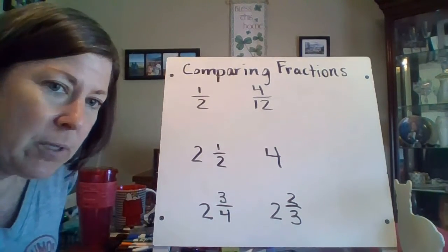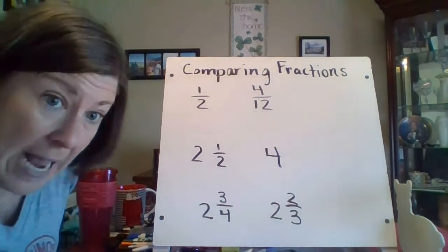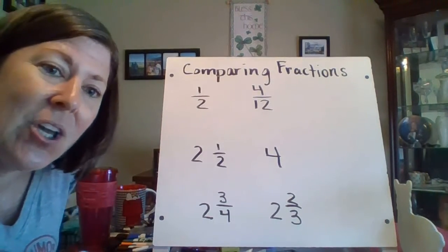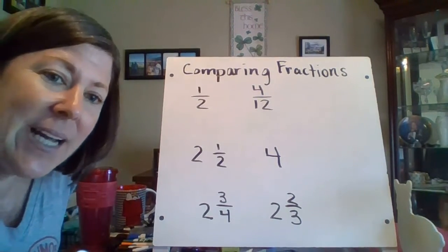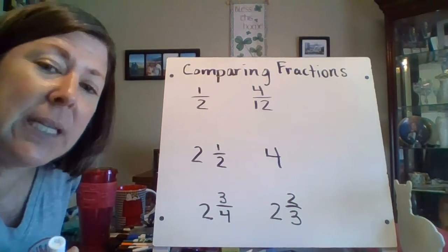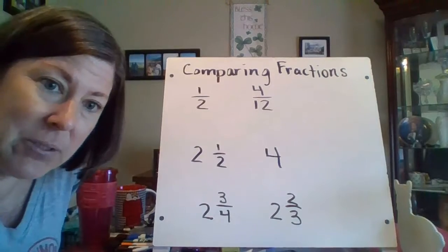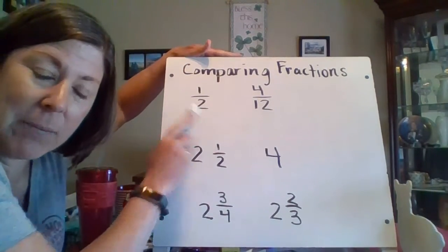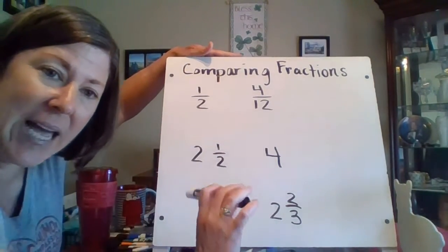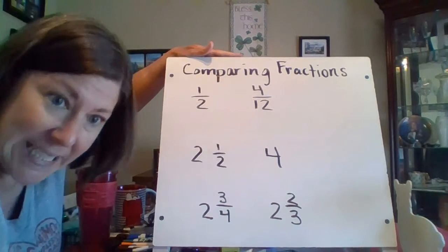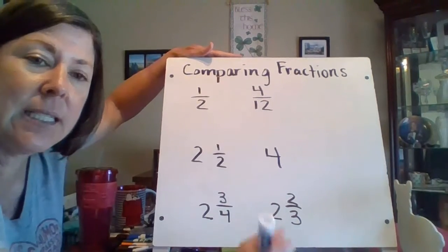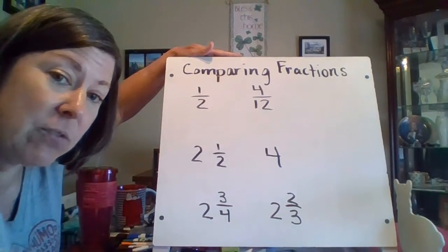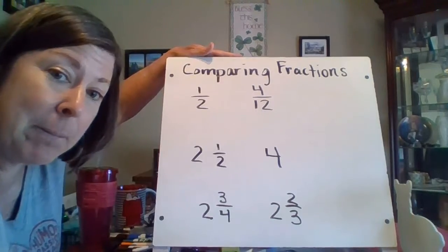We know that if we're comparing fractions, or adding fractions, or subtracting fractions, we need a common denominator. We need it to be apples to apples. When I look at my first example here, I have halves, I have twelves. This is not apples to apples, so I'm going to use a common denominator.